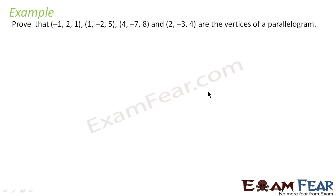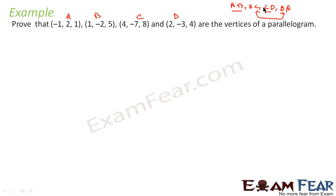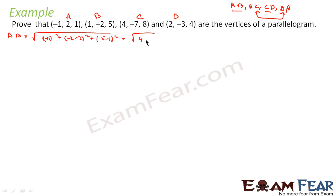We have to prove that the given points are the vertices of a parallelogram. Let's suppose the points are A, B, C, and D. We need to find AB, BC, CD, and DA. If we can prove AB equals CD and BC equals DA, then we can say it is a parallelogram. So first let's find AB: root of (1 plus 1)² plus (minus 2 minus 2)² plus (5 minus 1)², which is root of 4 plus 16 plus 16, root of 36, equal to 6.